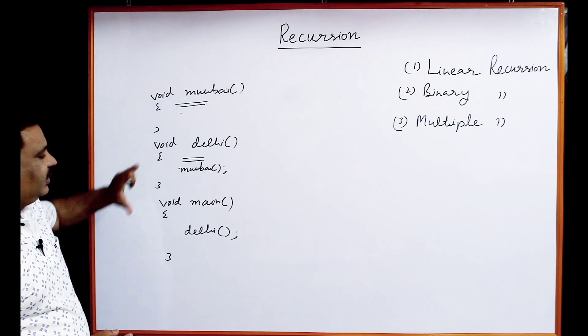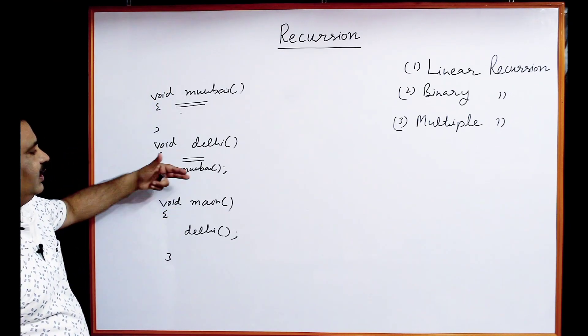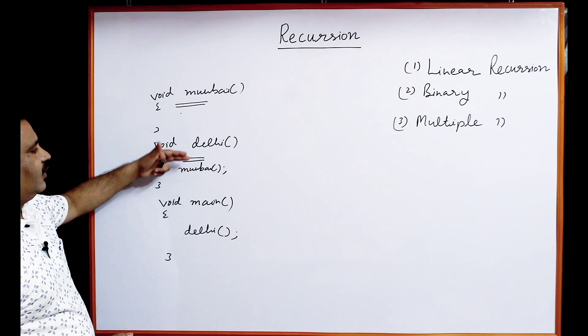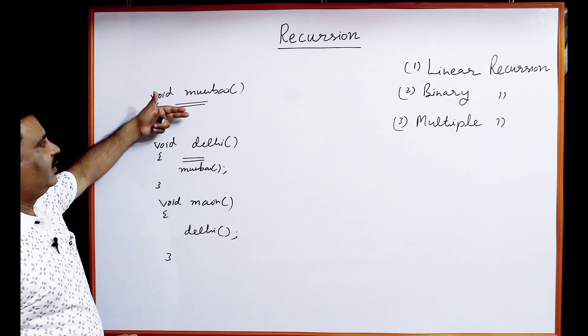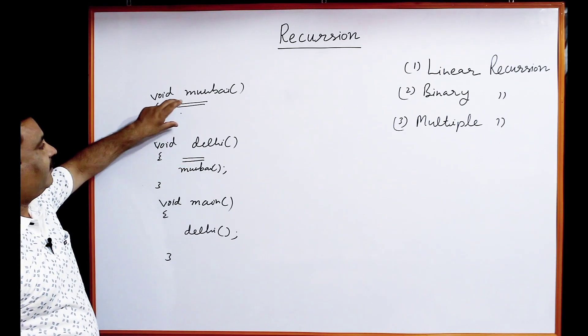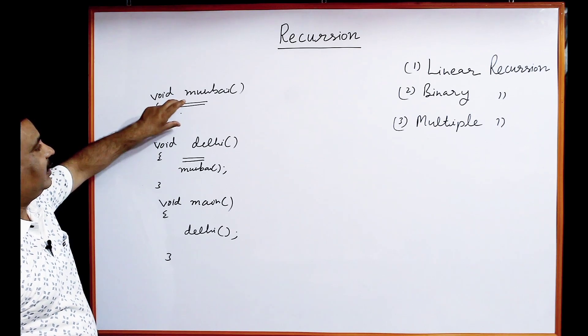Suppose from main we have called Delhi, from Delhi we have called Mumbai, and Mumbai is the last function. Then finally control will come back to Delhi, then back to main, and it will come out of the main function. This is called simple function calling.